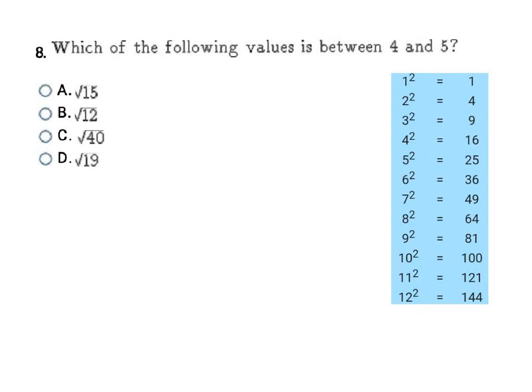For this question, I also wrote down my list of perfect square numbers. Which of the following values is between 4 and 5? It lists the square roots. This time, I'm going to look at where 4 and 5 are on my list. That means I'm looking for a number between the square root of 16 and the square root of 25, because 4² = 16 and 5² = 25. The only number between the square root of 16 and the square root of 25 is the square root of 19, which makes D my final answer.